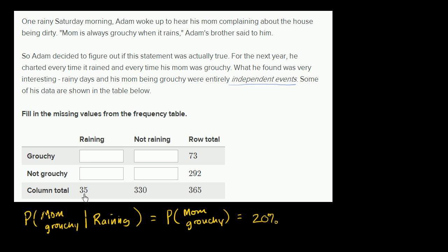So what is 20% of 35? Well, 20% is one-fifth. One-fifth of 35 is seven. And once again, all I did is I said 20% of 35 is seven. And if that's seven, then 35 minus seven, that's going to be 28 right over there. And then if this is seven, then 73 minus seven is going to be 66.